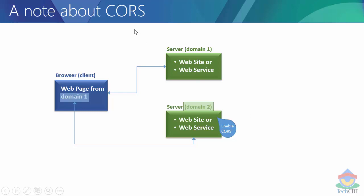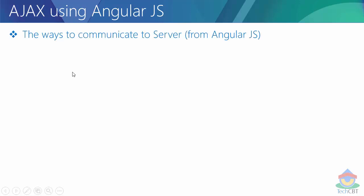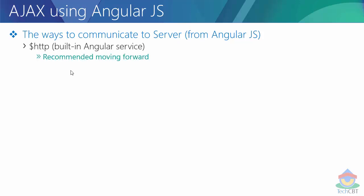In simple words, if you would like to access domain2 information from any domain, you need to enable CORS. Once CORS has been enabled from domain2, any browser rendering any web page from any domain can access the information from domain2. We are going to see how CORS can be enabled using ASP.NET Web API or Node.js as part of this video. How do we achieve Ajax using AngularJS — how do we communicate to the server? Ajax is a network activity; you are actually going to communicate with the server, call some method, and the server will respond back.